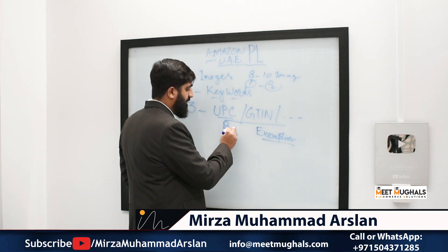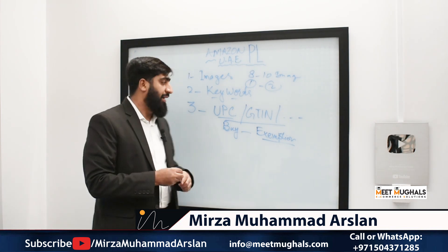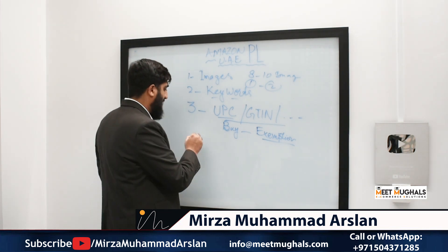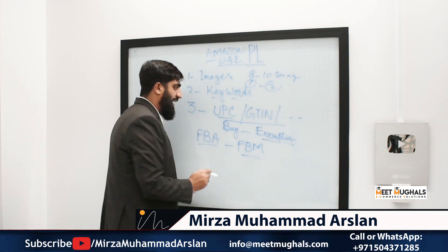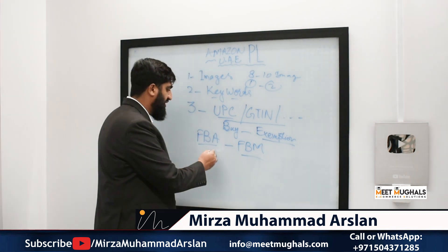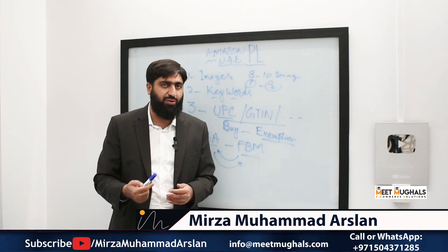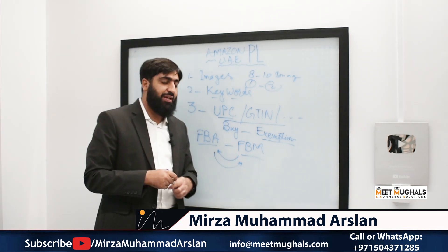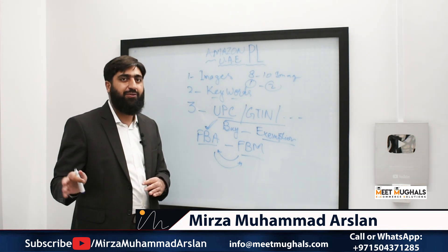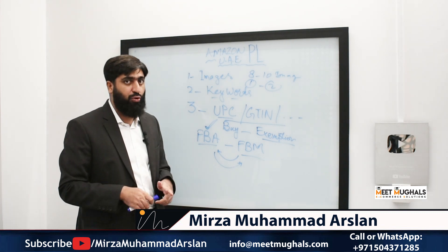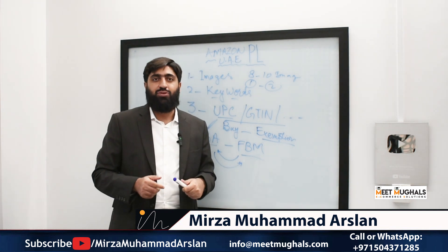So if you have all three things — images, keywords, and UPC or GTIN — you are ready to list that product on Amazon. At the time of listing, Amazon will ask whether you want to list it as FBA (Fulfillment by Amazon) or FBM. You can leave this step at the time of listing because you have an option to change or switch anytime. But if you are making a shipping plan — which we will discuss in the next video, how to bring inventory from supplier to Amazon warehouse — your listing must be on the FBA model.